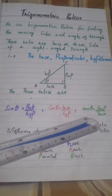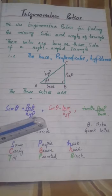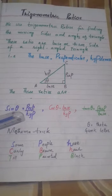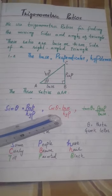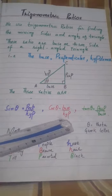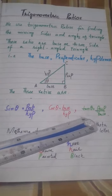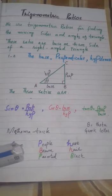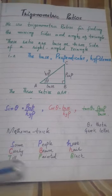The three ratios are sin theta, cos theta, and tangent theta. We use these three ratios for finding the missing side and missing angle of a right angle triangle. Sin theta is equal to perpendicular upon hypotenuse. Cos theta is equal to base upon hypotenuse. And tangent theta is equal to perpendicular upon base.